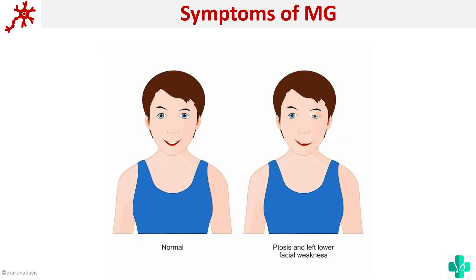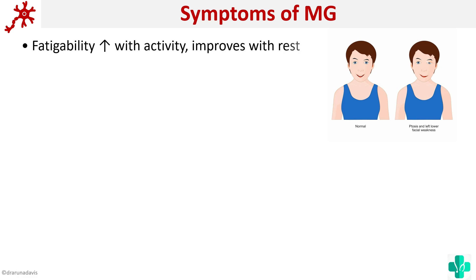The main problem in myasthenia gravis is that the muscle cannot respond because there are no acetylcholine receptors, so the muscle cannot contract properly. This symptom will first be seen in the eyelid muscles, where after some time there would be drooping of eyelids. In the morning the person might be fine, but as the day progresses there may be drooping of eyelids. The person will generally complain of increased fatigability, and as the disease progresses even the proximal muscles may be involved. The characteristic feature is fatigability which increases with activity and improves with rest.